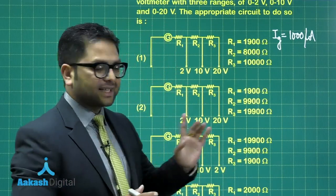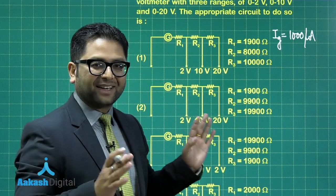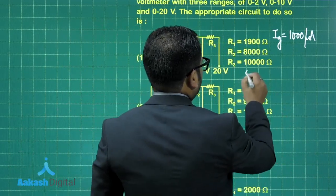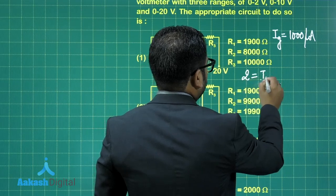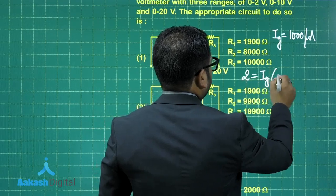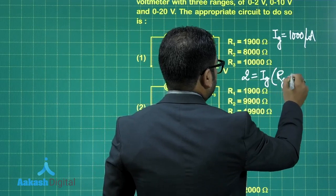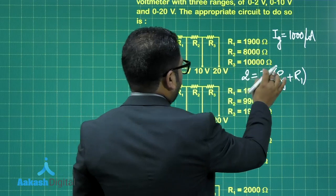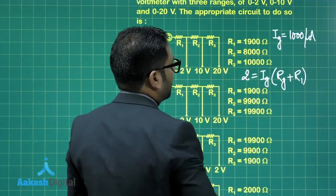So the first thing, see, if I want to go with the 2 volt, let me write it here. 2 volt will be IG multiplied by galvanometer resistance plus R1. Now galvanometer resistance is known. IG is known. You can calculate R1.